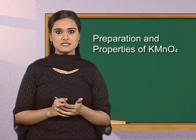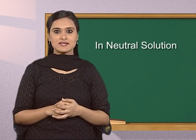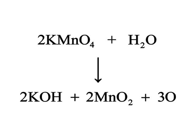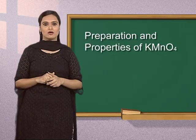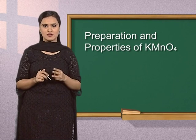Let us discuss the oxidizing property of potassium permanganate in different solutions. In neutral solution, potassium permanganate acts as an oxidizing agent. It reacts with water to form potassium hydroxide, manganese oxide and nascent oxygen gas. Alternatively, permanganate ions react with water and electrons to form manganese dioxide and hydroxyl ions. In neutral medium, 2 moles of permanganate form 3 nascent oxygen atoms.